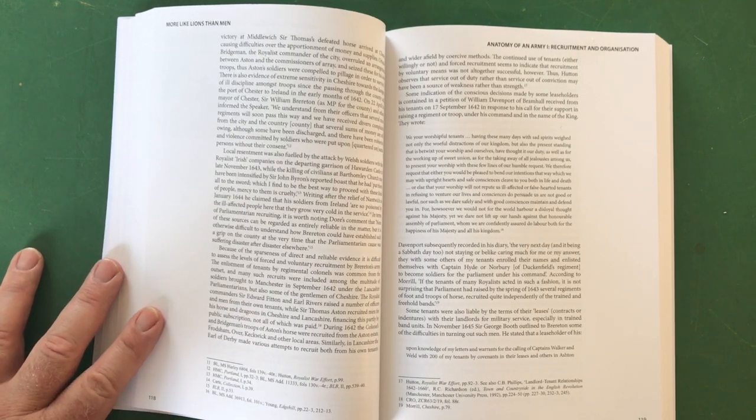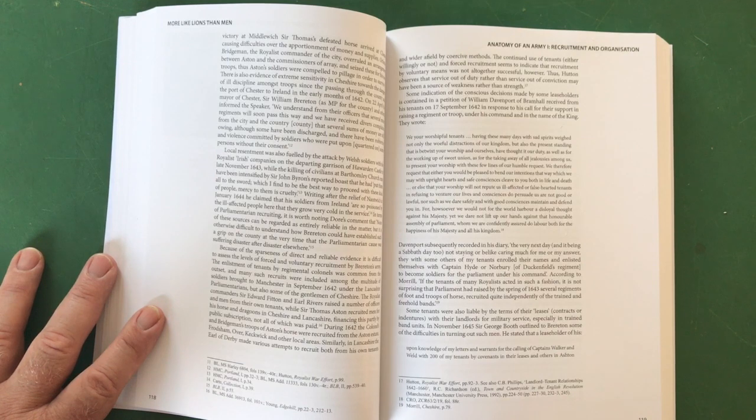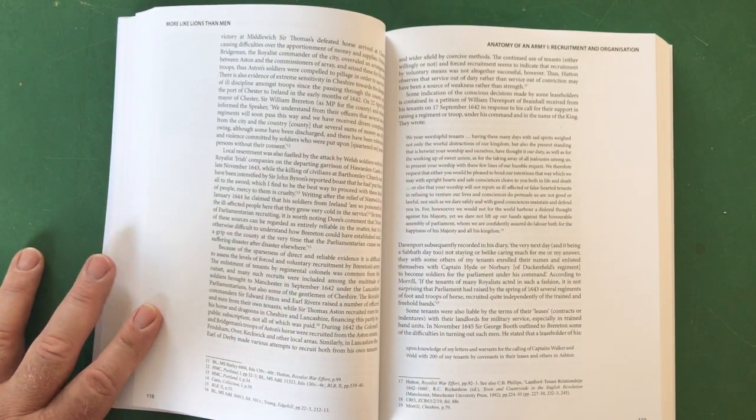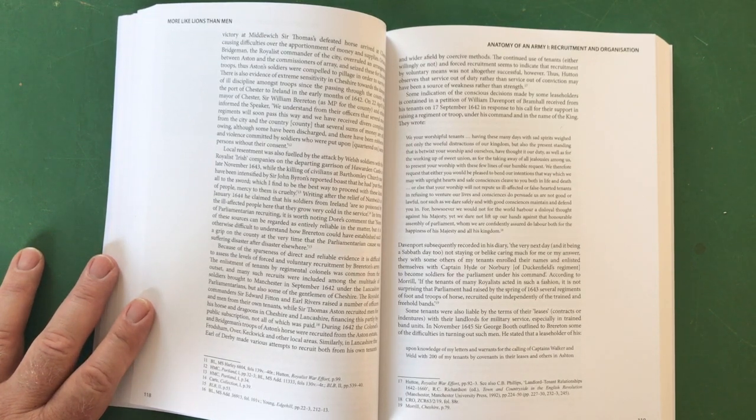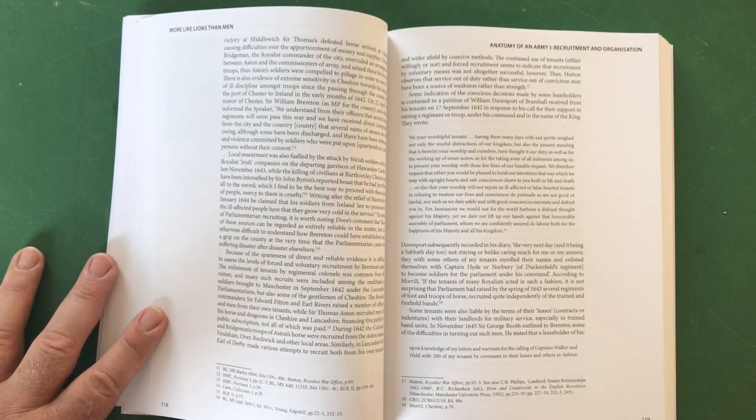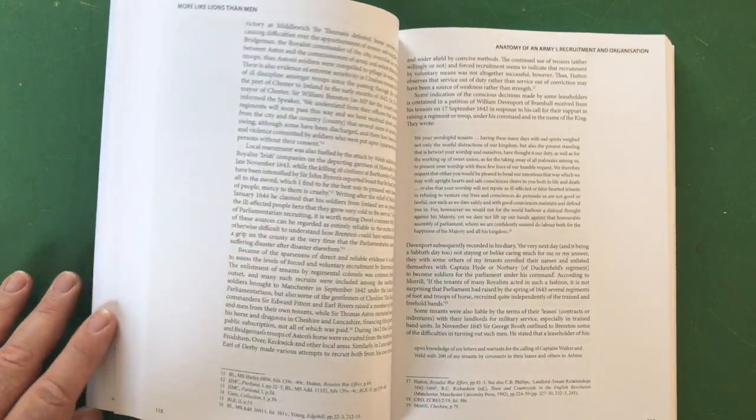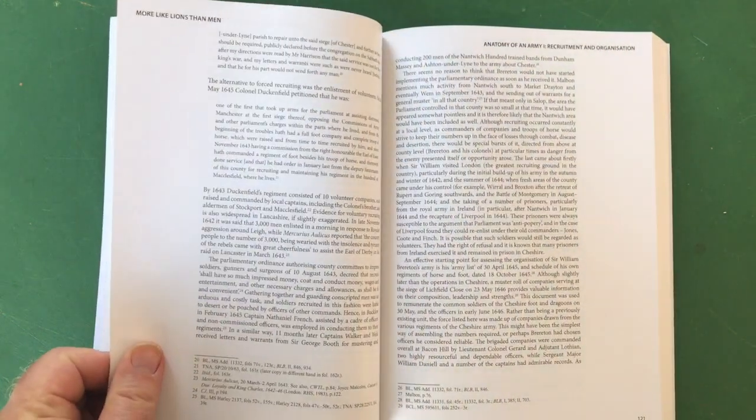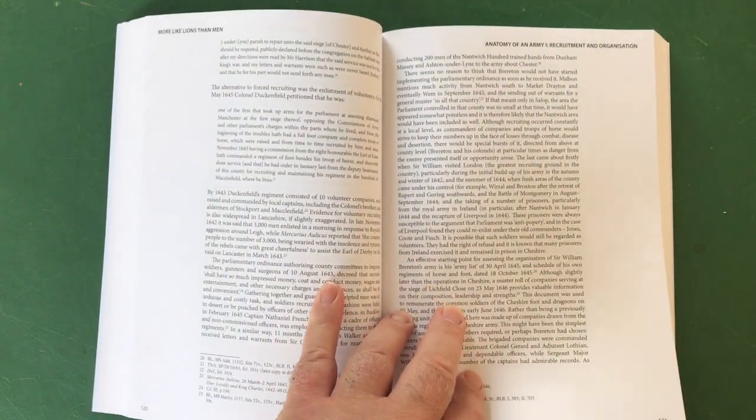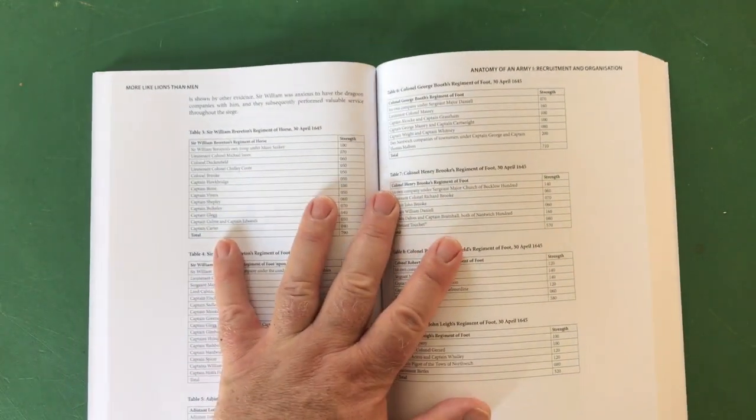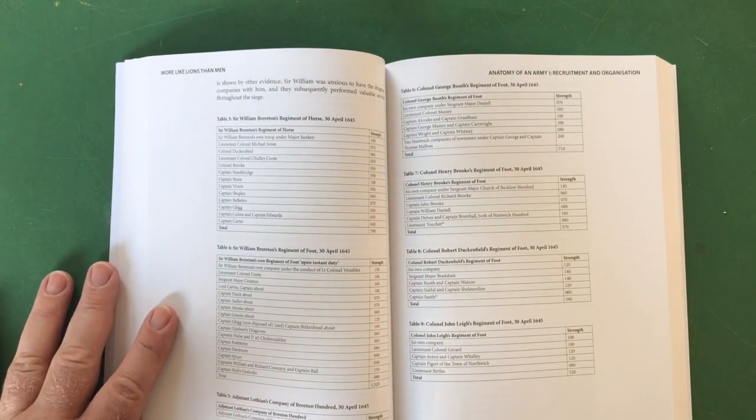Whom we are confidently assured do labor both for the happiness of his majesty and all his kingdom. So basically they're saying to him, now we don't want to join your army, we don't want to join the king's army to fight against parliament. That's quite a thing. Can you imagine the effect that a letter like that would have had? It carries on talking about how William Davenport responded. Extraordinary times these were - extraordinary times, setting brother against brother, landlord against tenants and so on.